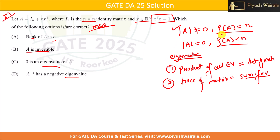Based on these properties only, we can solve this question. Whenever you see this type of question, write down what you know about rank, determinant, invertibility, and eigenvalues, then apply those properties. Now let's come back to the question — we have matrix A.